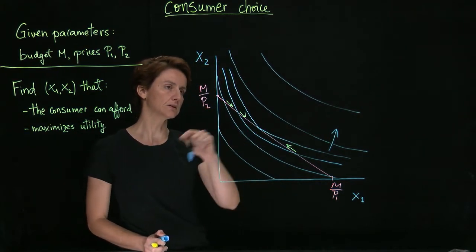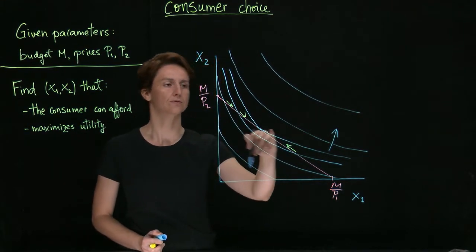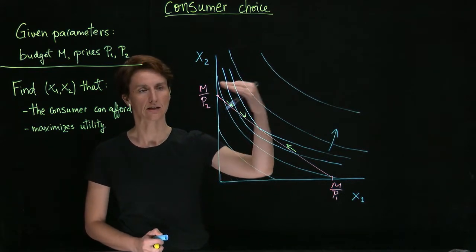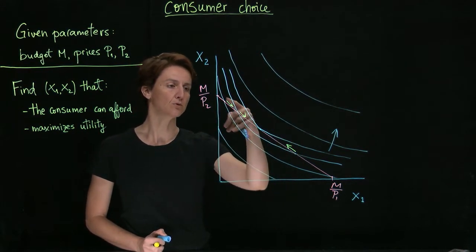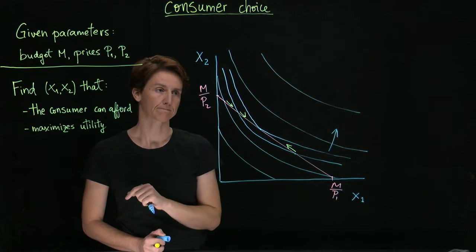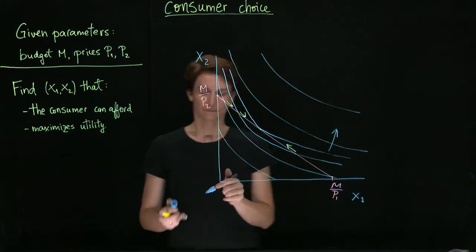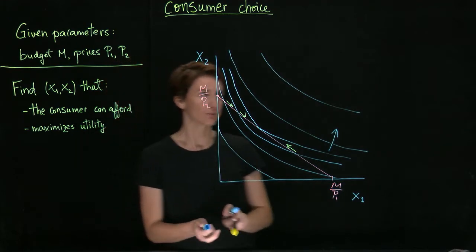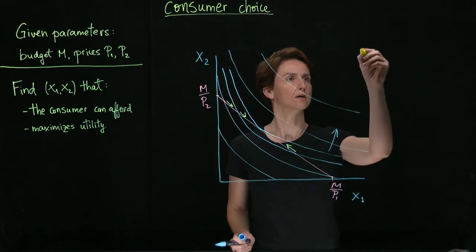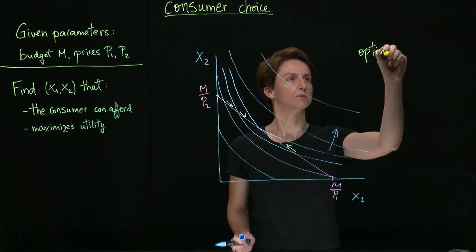That's the only time when you can't improve utility. You can't get on a higher indifference curve by moving along the budget constraint.